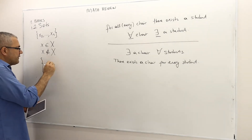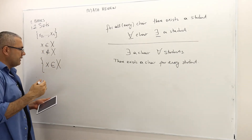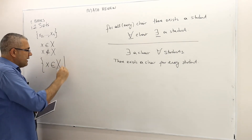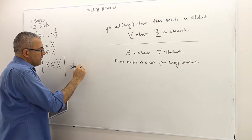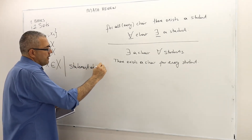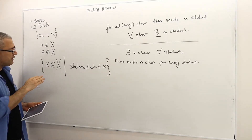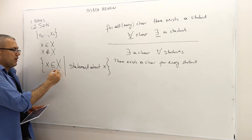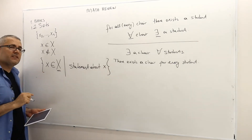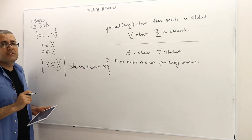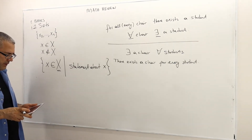Here's an important way of defining a set that we are going to use in our advanced level courses a lot. We write: the set of all x in some capital X such that some statement about x holds. This denotes all the elements of capital X for which that statement about x is satisfied. That's very, very important — we use this definition a lot.